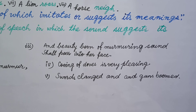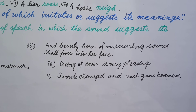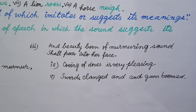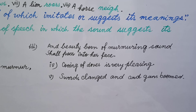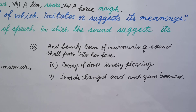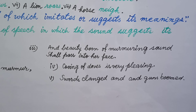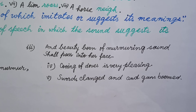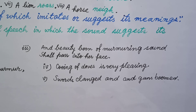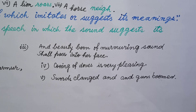Example: 'Cooing of doves is very pleasing.' Cooing is the particular sound of doves and this sound represents doves — onomatopoeia is the poetic device used here. 'Swords clanged' — the sound of swords clanging is used here. 'The guns boomed' — the explosion of guns is represented as 'boom' and 'boomed.' There are two words based on sounds — clanged and boomed — so onomatopoeia is beautifully used in this example.